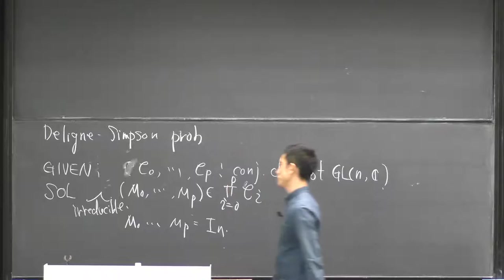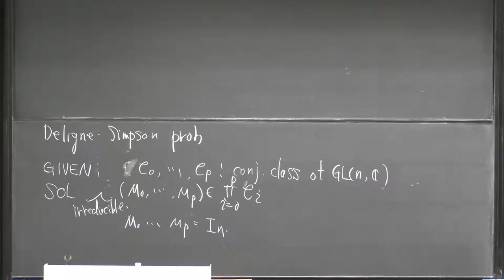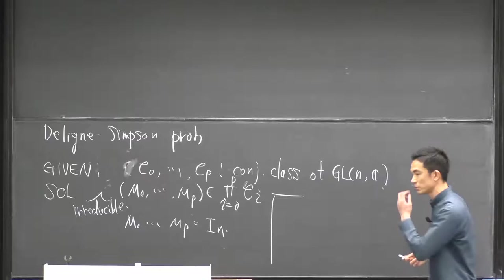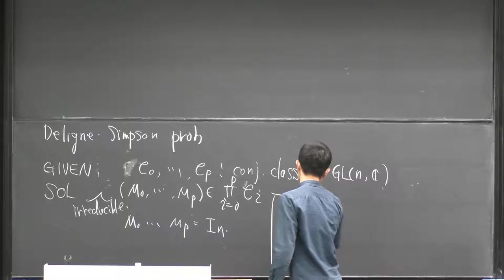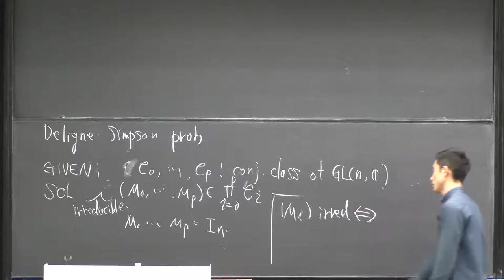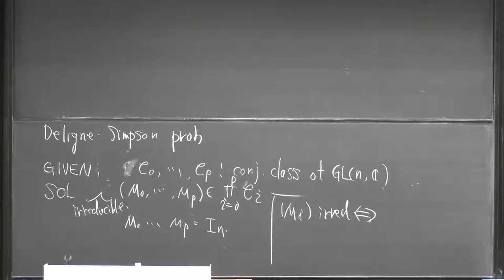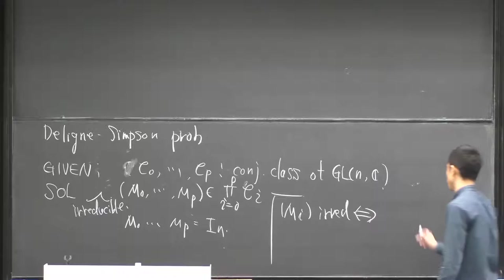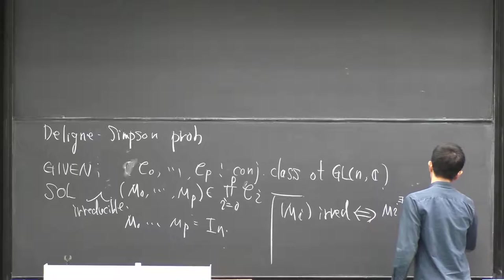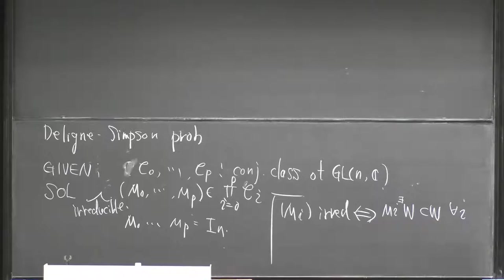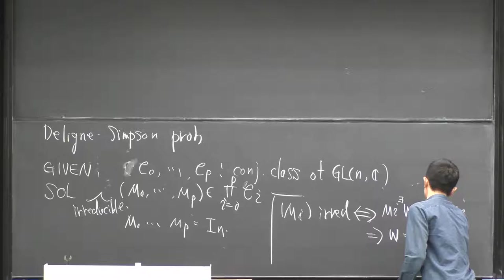We would like to find an irreducible tuple of matrices which satisfy the given equation. I call a tuple of matrices irreducible if and only if there is no non-trivial simultaneous invariant subspace. That is, if there exists some vector space W which is preserved by all of the matrices, then W should be trivial.